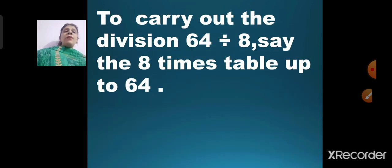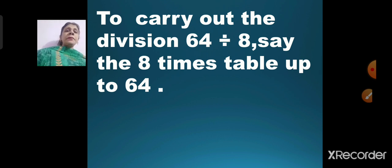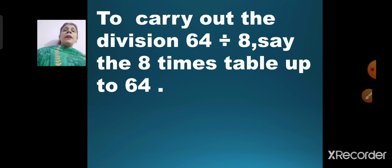Next, to carry out the division 64 divided by 8, we will say the table of 8 up to 64, where the number 64 comes. 8 ones are 8, 8 twos are 16, 8 threes are 24, 8 fours are 32, 8 fives are 40, 8 sixes are 48, 8 sevens are 56, 8 eights are 64. So 64 divided by 8 will be 8.